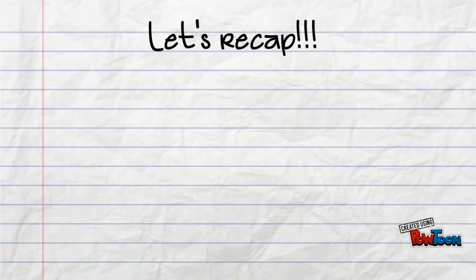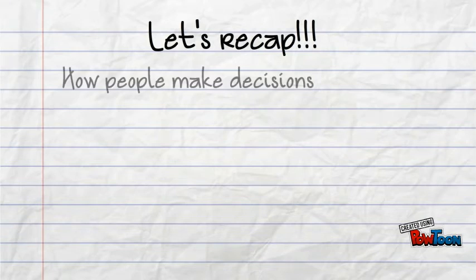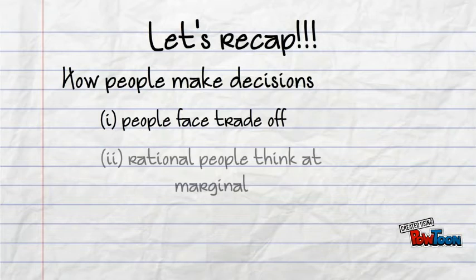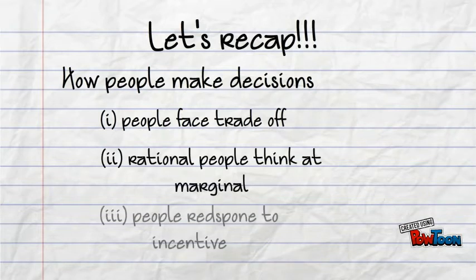Now let's recap. The first fundamental lesson is how people make decisions. One, people face trade-offs. Two, rational people think at the margin. And three, people respond to incentives.